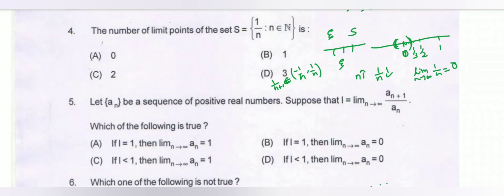For any neighborhood of 0, we get at least one member of S. So 0 is a limit point of set S. The number of limit points of the set S is one. Option B is the correct option.